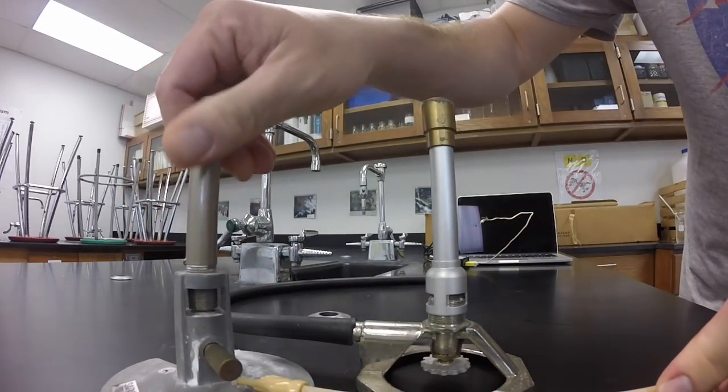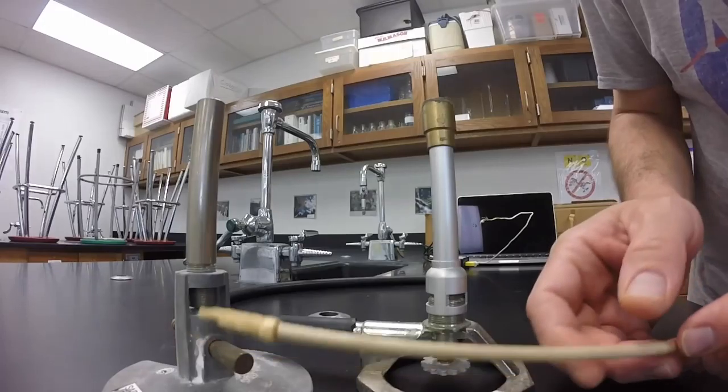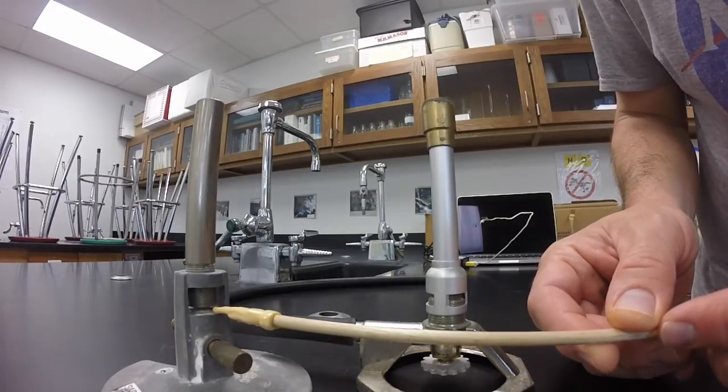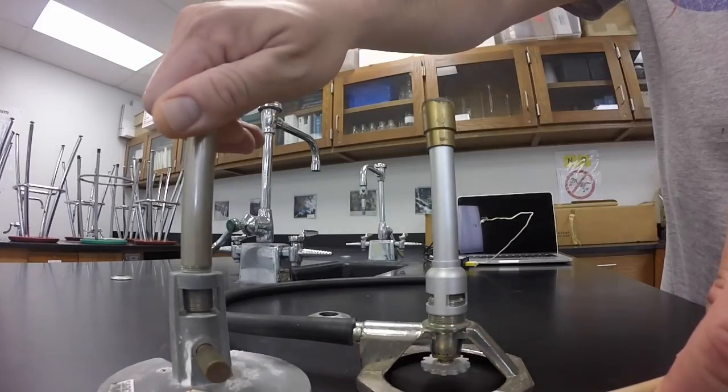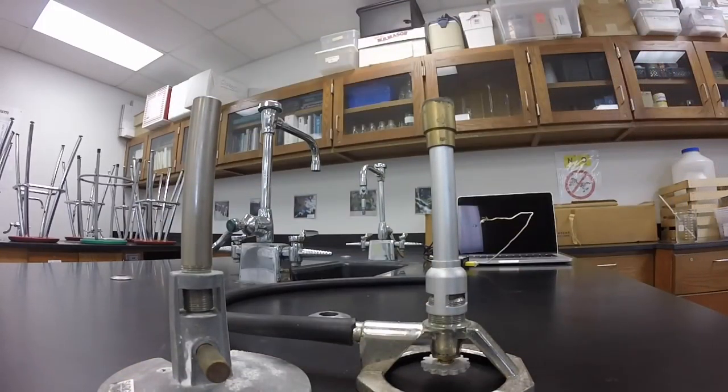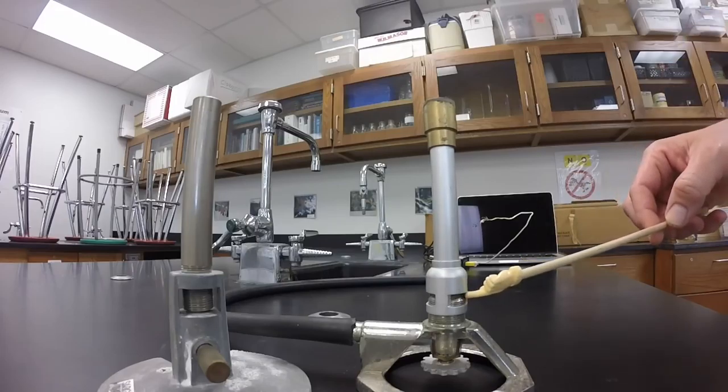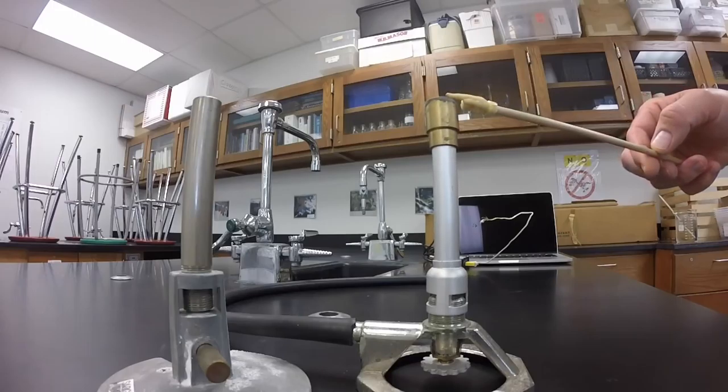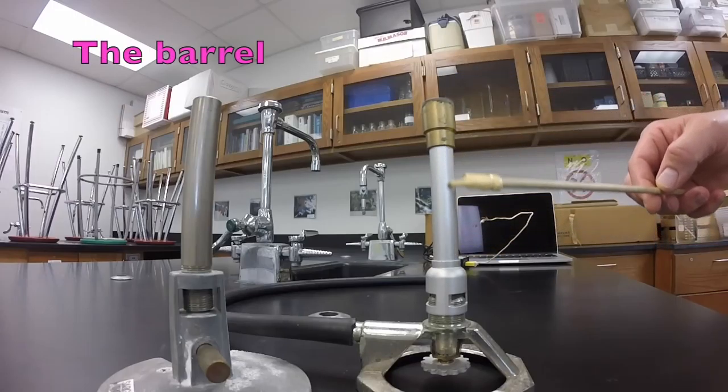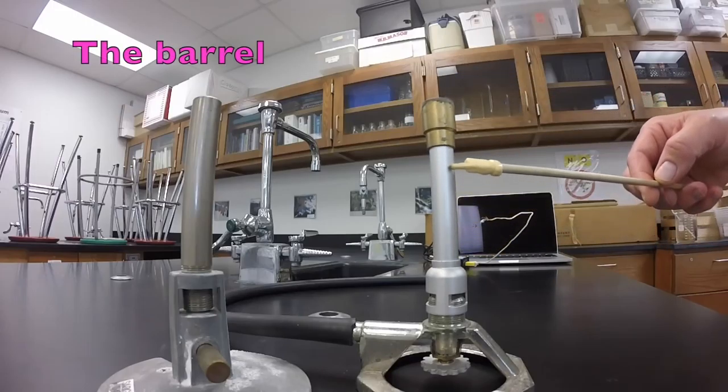On this model, as you adjust it, it opens up a small vent at the bottom of the barrel. The barrel is the body that carries the gas and air mixture from the vent up toward the mouth of the Bunsen burner. So this length of metal is called the barrel.